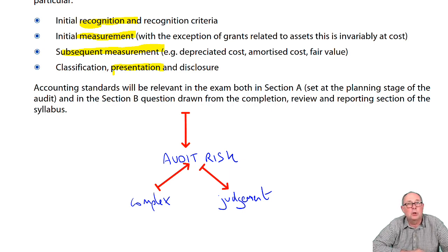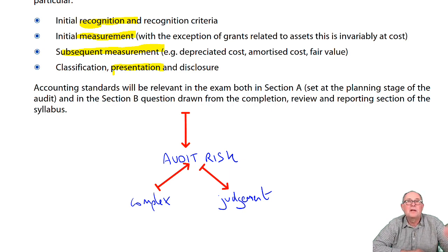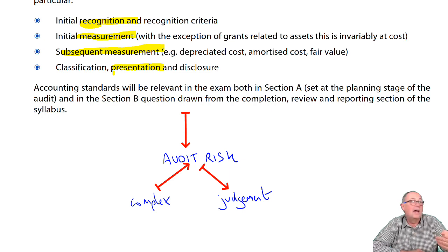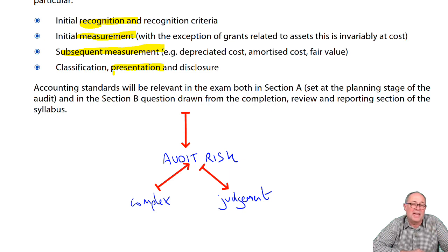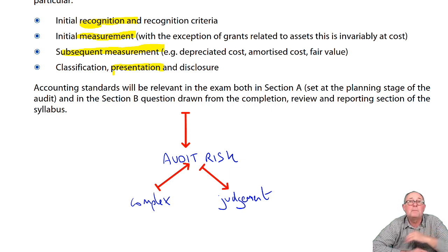Audit risk is about things that are complex and judgmental. So when you look through strategic business reporting, financial instruments are complex — that would push up audit risk in any scenario question. Something like impairment of receivables under the new financial asset rules is judgmental, as is estimating the number of staff in a share-based pay scheme. It's those things that the exam would probably tend to focus on.